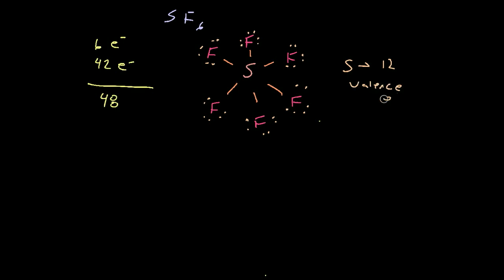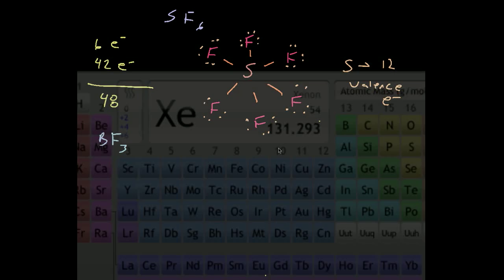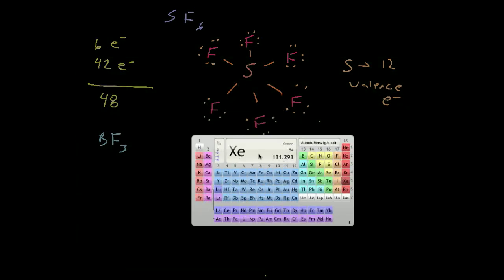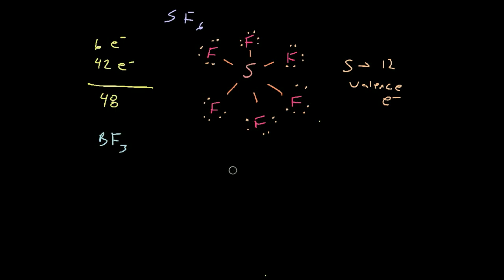These may be getting easy for you now, so let me show you a trickier example — one that's really common on standardized tests and maybe the MCAT. That's going to be BF₃. Starting from the beginning: boron is more metallic than fluorine, so it's going to be our central atom. We're going to have three fluorine atoms around it, all connected by at least a single bond. Fluorine is a halogen, so it's definitely a single bond.